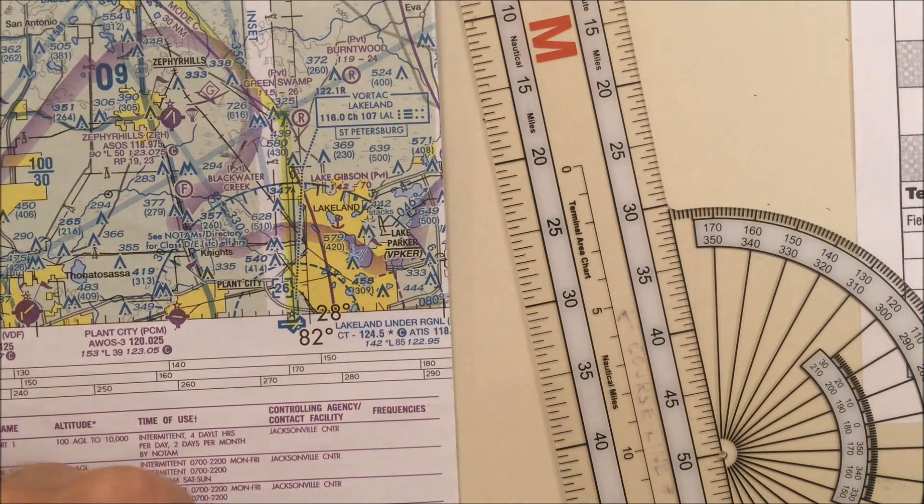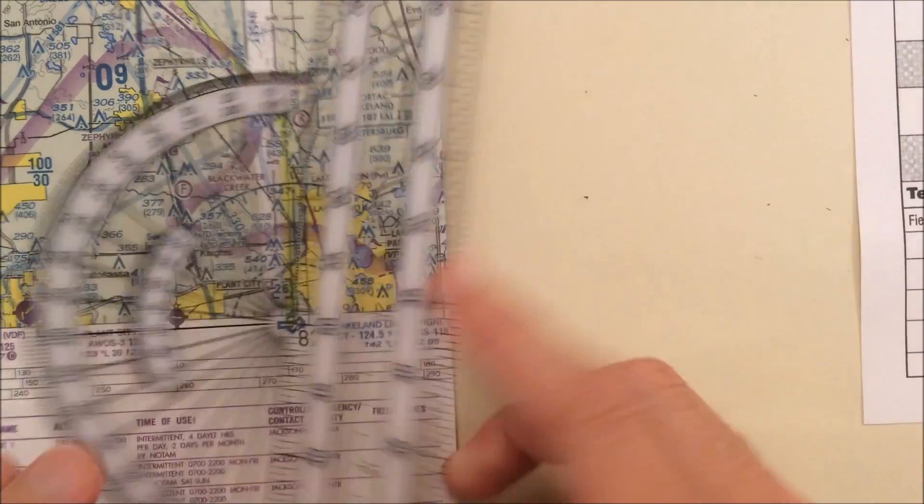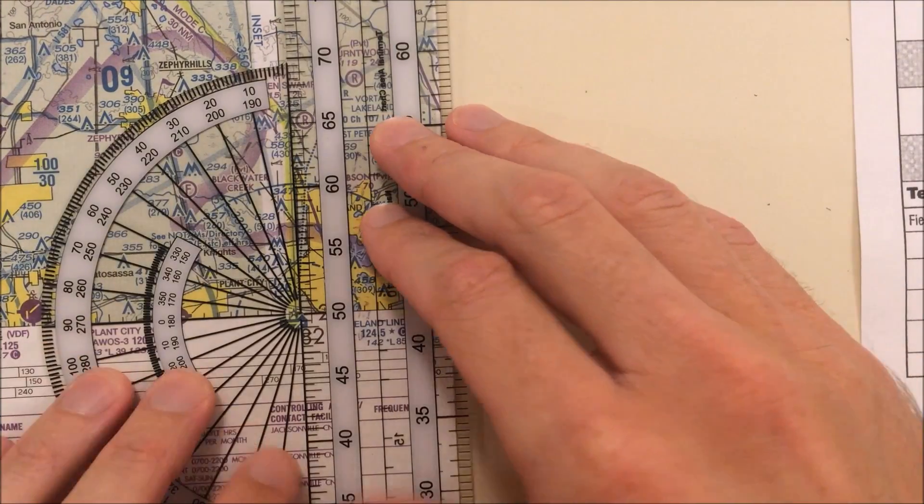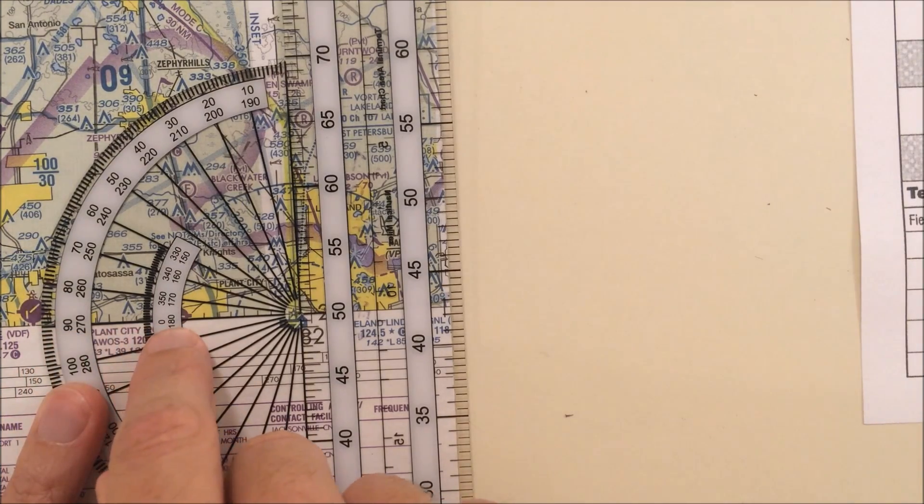So there's a line of latitude right here at the bottom by Lakeland, so I'm going to use that for my first one here. Now as I read my numbers, I have four options. You'll see that this line intersects four different numbers: 90, 270, 0, and 180.